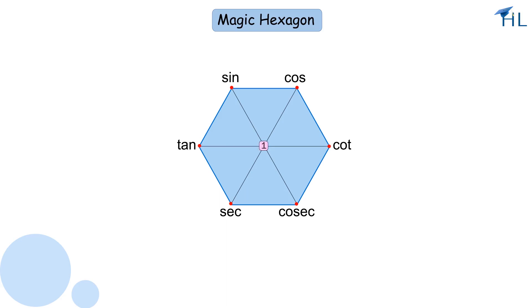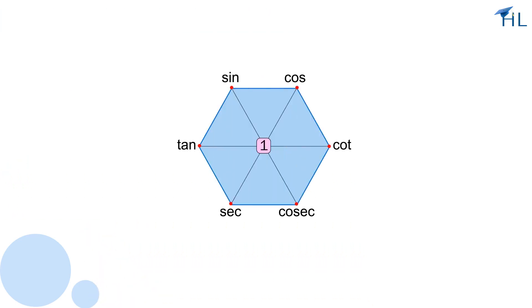Write one in the centre. This hexagon is a special diagram to help us remember some trigonometric identities. Always remember that the co-functions are all on the right side of this line. We have now built our hexagon.